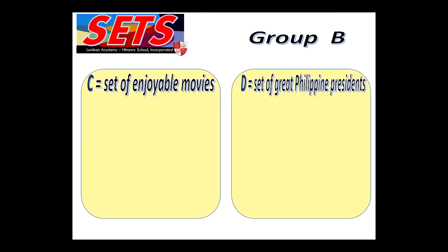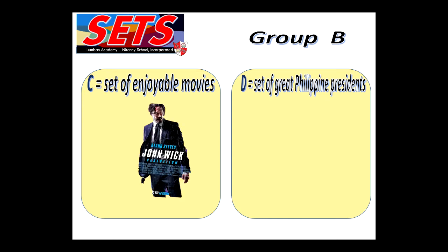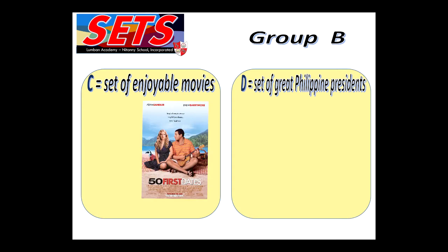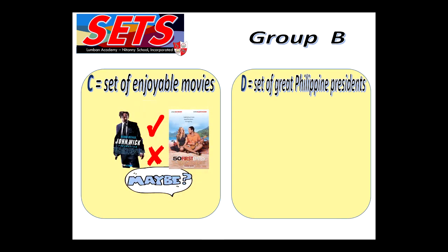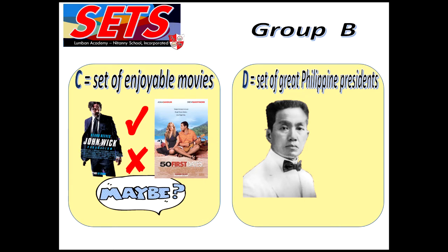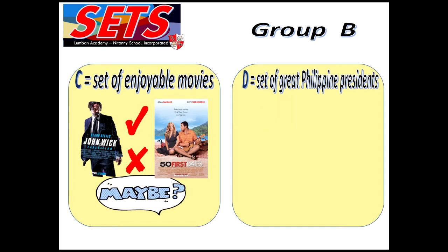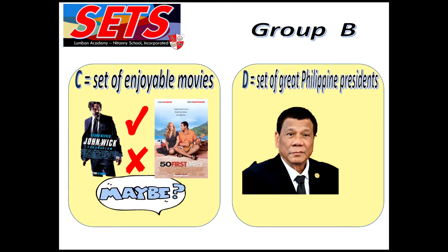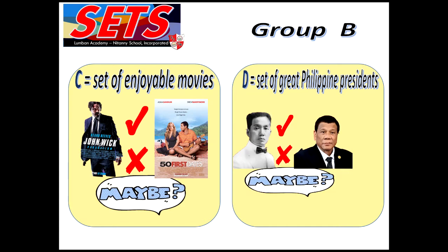Moving on to group B, set C is the set of enjoyable movies. The first movie here is John Wick, and the second is 50 First Dates. Do you think these are elements of set C? The answer would be correct, wrong, or maybe. For set D, the set of great Philippine presidents: Is Emilio Aguinaldo — the first president — a great Philippine president? And is President Duterte a great Philippine president? The answer would be correct, wrong, or maybe.